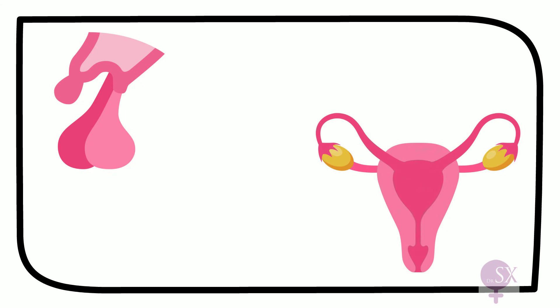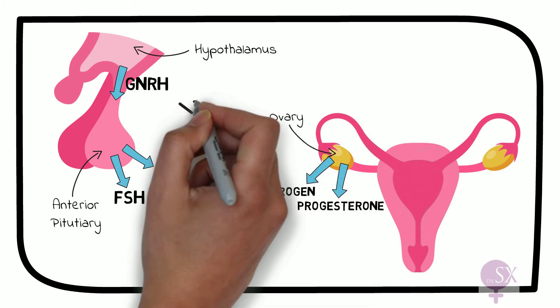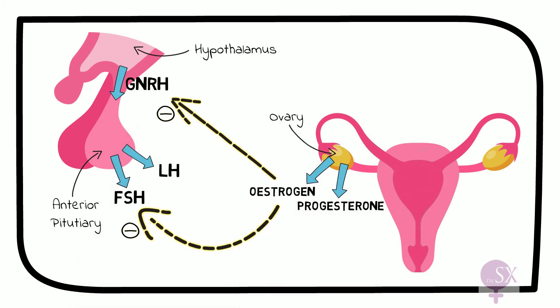Another thing we need to understand well is the basis of the HPO axis. We have the hypothalamus, the anterior pituitary gland, and the ovaries. It starts with the hypothalamus producing gonadotrophin-releasing hormone. GnRH stimulates the anterior pituitary to secrete follicle-stimulating hormone and luteinizing hormone. FSH stimulates the ovaries to secrete oestrogen and progesterone. Then the ovarian hormones have a negative feedback effect on both the hypothalamus and the anterior pituitary, decreasing the release of GnRH, FSH, and LH.